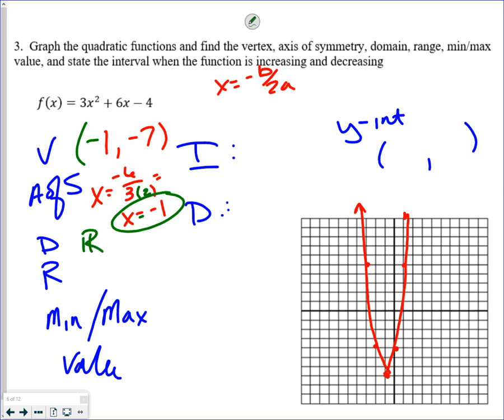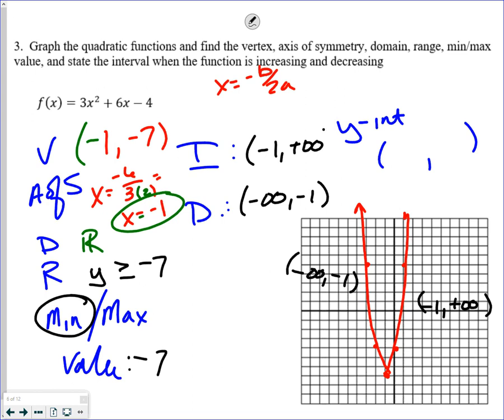The domain would be all real numbers. Range. Y values greater than or equal to negative 7. It has a minimum. The minimum value is negative 7 then. Increasing and decreasing. I talk about this being a situation where you go at it from left to right. So on this side, it's negative infinity to negative 1. And from this side, it's from negative 1 to positive infinity. The question is, which one is it increasing or decreasing? It is decreasing on the left. And it is increasing on the right.